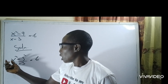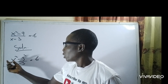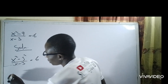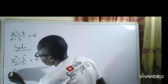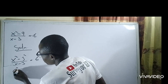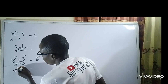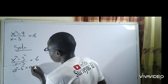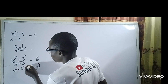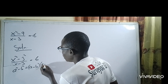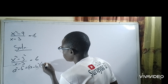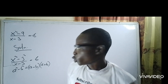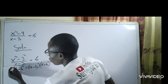I can use the law that says if I have a squared minus b squared, it equals a minus b multiplied by a plus b. That is the difference of two squares.